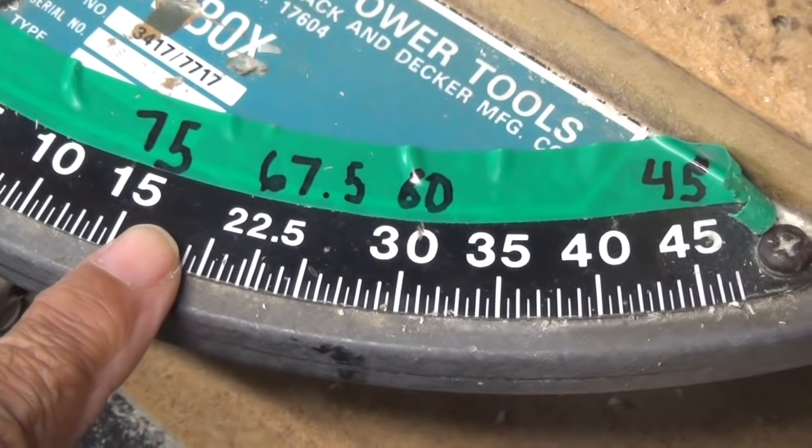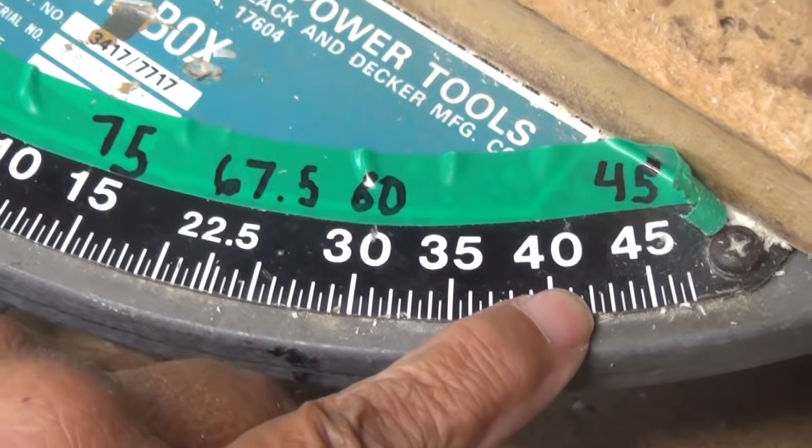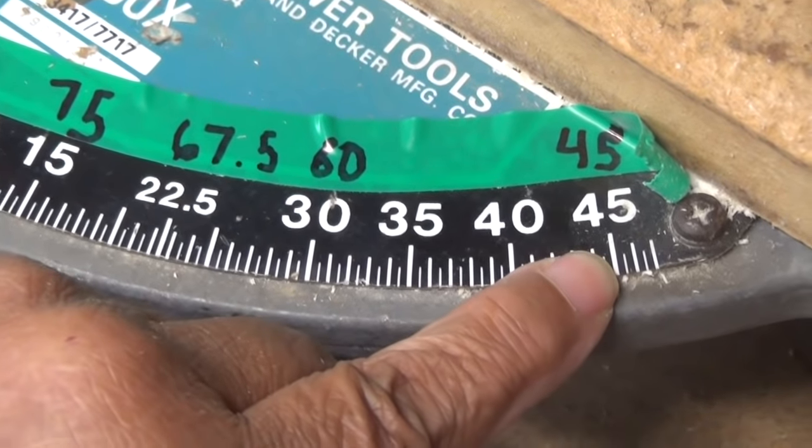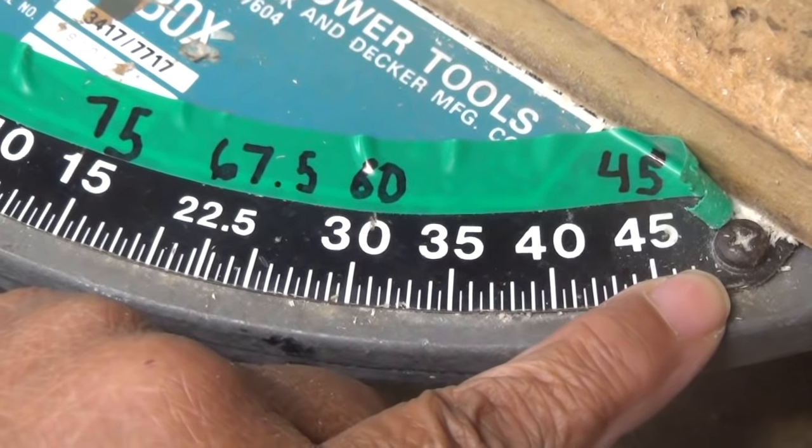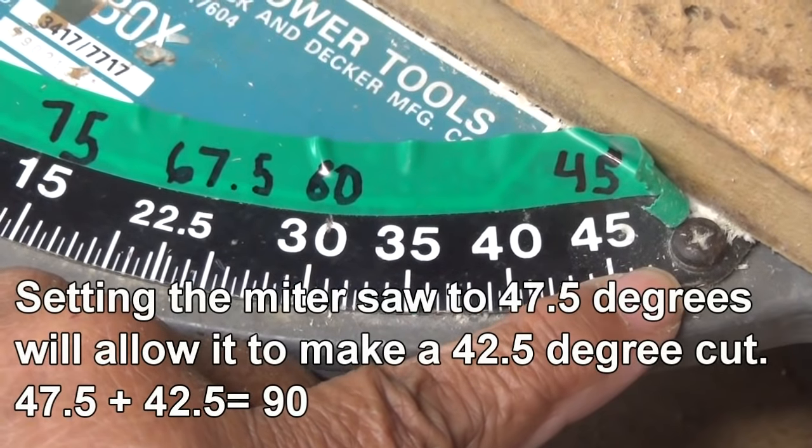So what we have to do is instead of setting our saw at 42 and a half, you really have to go up and set it at 47 and a half, because that is the complementary angle.